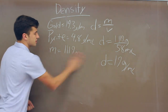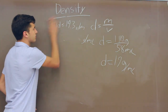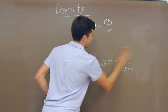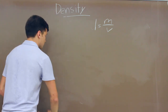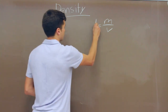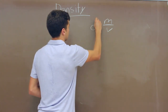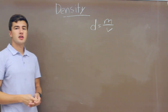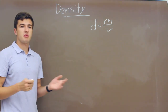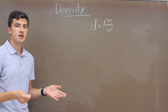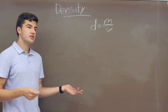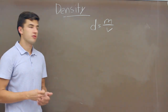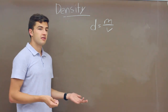Next, we're going to use our density equation in a different way — to solve for the mass of something. We might want to do this because the scale in our lab is broken, or for another reason we don't have a scale.